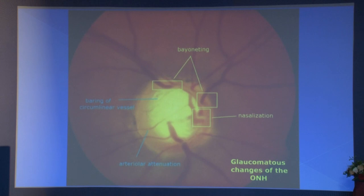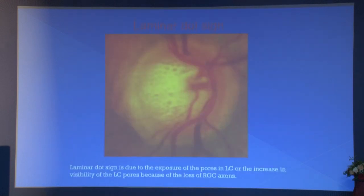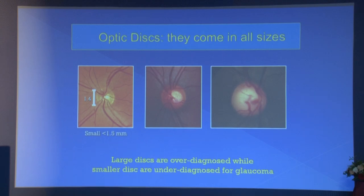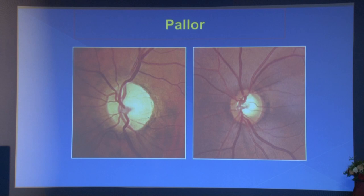Hard signs of glaucoma include baring of the circumlinear vessel — where the cup has enlarged. Advanced glaucoma shows the laminar dot sign. Disc size is a very important consideration — a disc of 1.2mm should have no cup, and even a 0.2 cup is likely glaucoma, whereas a 2.5mm disc can have a 0.8 cup and still be normal. Diffuse pallor is always suggestive of a neurological problem beyond glaucoma.